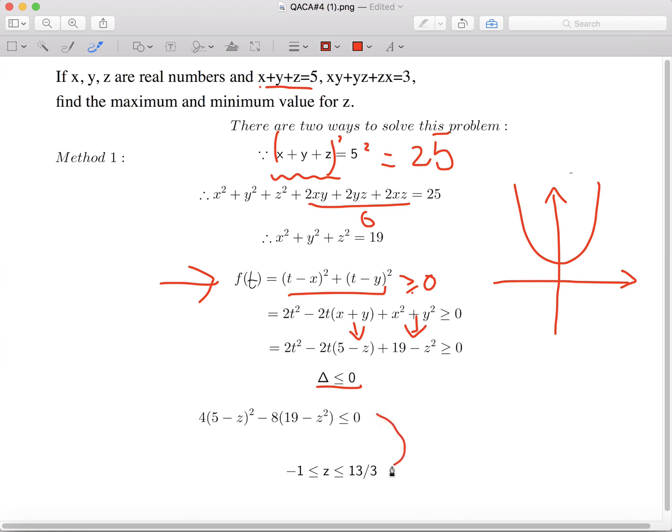If we solve this equation, we get z is bigger or equal to negative 1, and z is smaller or equal to 13 over 3.